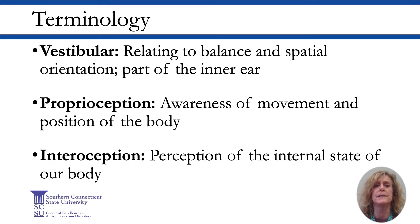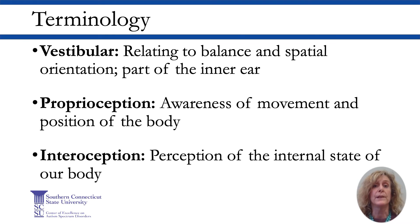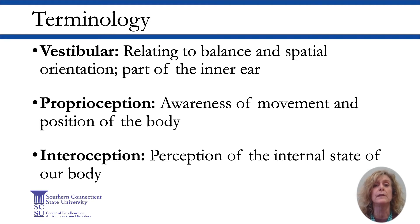When we talk about the vestibular system, we are referring to the part of the inner ear that manages balance and spatial orientation. Proprioception is a term that refers to the sense of body position and awareness of movement. Proprioceptors are located within muscles, joints, and tendons and are triggered by movement. The final term, interoception, refers to the perception of the internal state of the body. This involves such states as hunger, thirst, and fatigue.